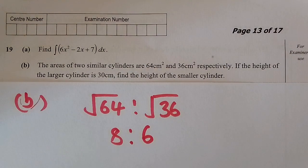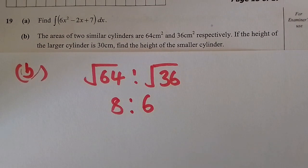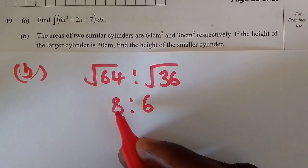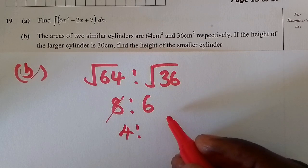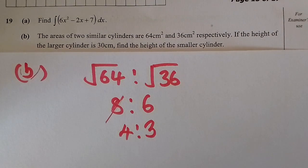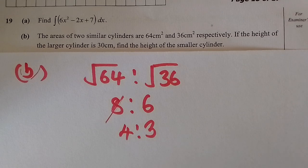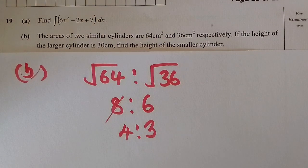We reduce the ratio 8 to 6: the number 2 goes into both, giving 4 to 3 in its lowest form. So the two cylinders are in the ratio 4 to 3 — the larger has ratio 4 and the smaller has ratio 3. The height of the bigger cylinder is given as 30 centimeters.